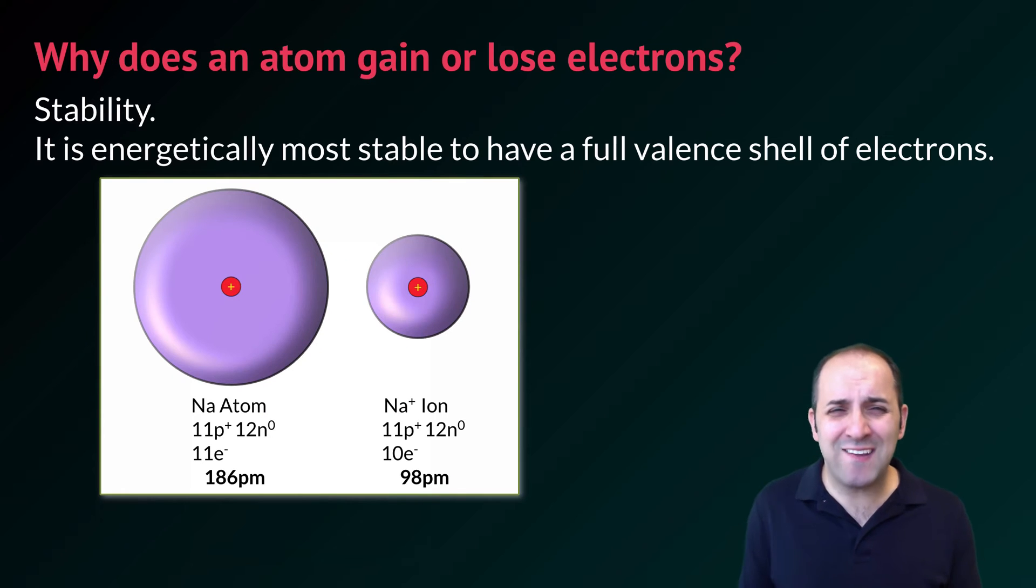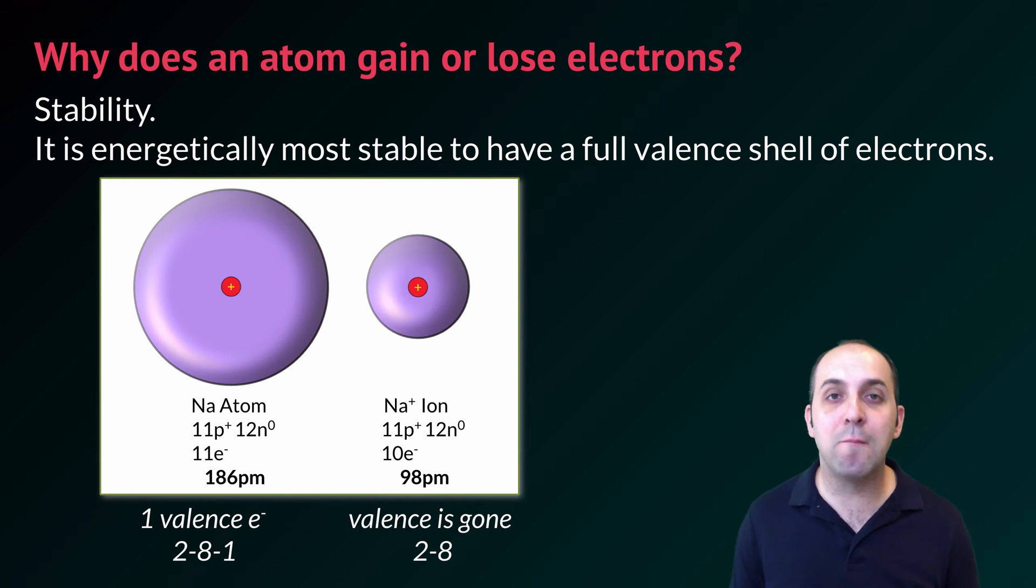A good question could be, well why does an atom gain or lose electrons? And the answer has to do with the stability of the atom. It's energetically most stable to have a full valence shell of electrons. We can see this by looking at our sodium example. The sodium atom has an electron configuration of 2-8-1, so it has 1 valence electron. When it becomes an ion, it loses that 1 valence electron, and now its configuration is 2-8. Having 8 electrons as its valence is a much more stable configuration than having 1 electron.